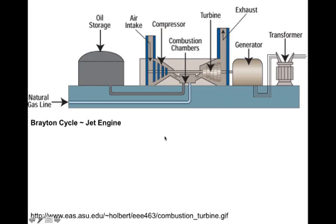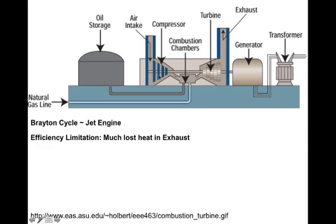We can generate electricity with the Brayton cycle. We have an air intake, compress it, and under high pressure we add either oil or natural gas. Then it burns and expands out the exhaust. Because you heat it, you're pumping way more volume of gas out than came in, because the gas expands. The efficiency limitation in a Brayton cycle is there's still a lot of heat in that exhaust, so we don't turn all of it into electricity. When we're not trying to move an airplane, we want the energy to go into the shaft — it rotates, turns a generator, and generates electricity. This is where a lot of our electricity comes from.